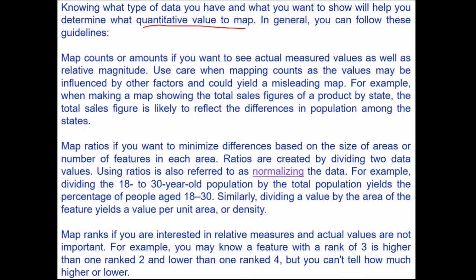For example, when making a map showing total sales figures of a product by state, the total sales figures are likely to reflect the differences in population among the states. Map ratios if you want to minimize differences based on the size of area or number of features in each area. Ratios are created by dividing two data values, and using ratios is also referred to as normalizing the data.